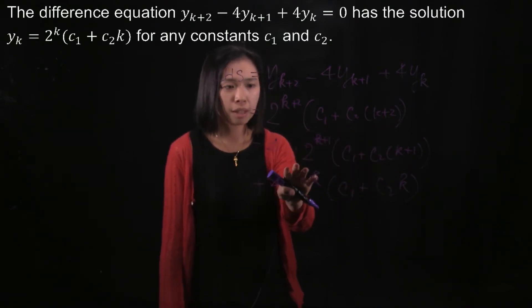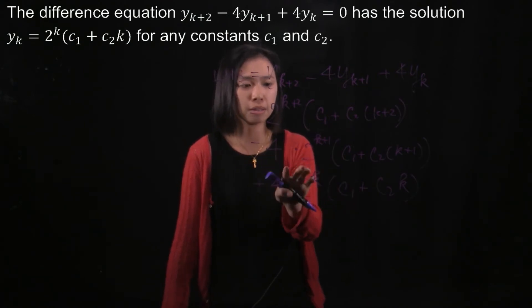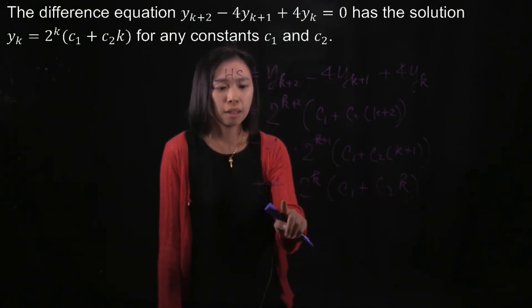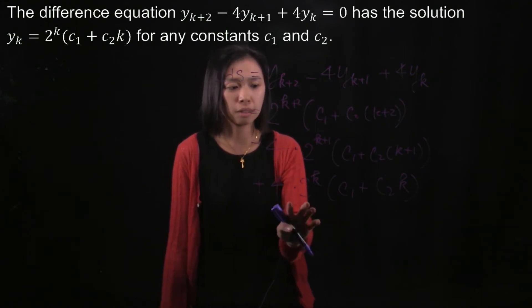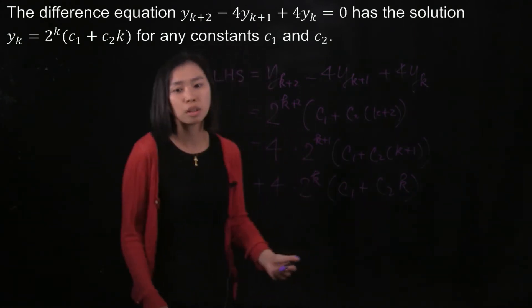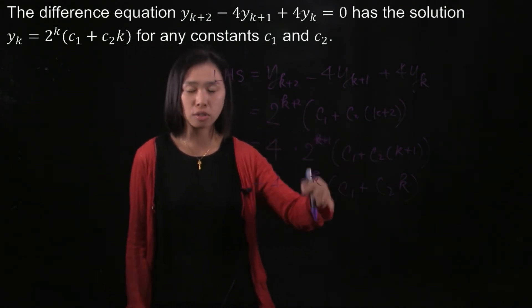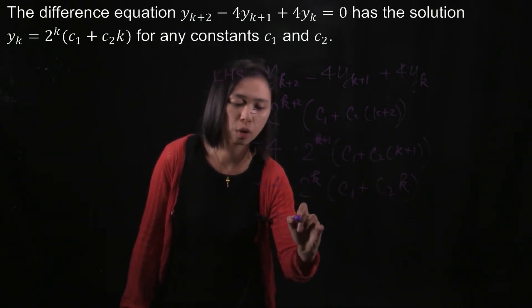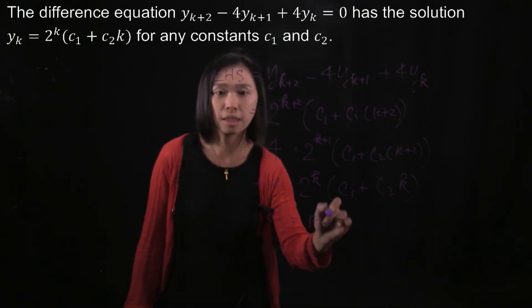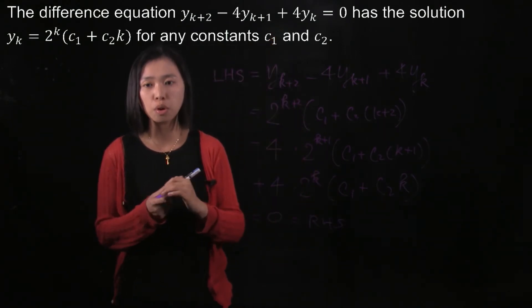And then you minus this thing times this thing, and then minus this thing times that thing. And then you add this times this, and then this times this. So at the end, I believe that after you cancel all the terms, you will get 0, which is the same as the right-hand side. So we prove that.